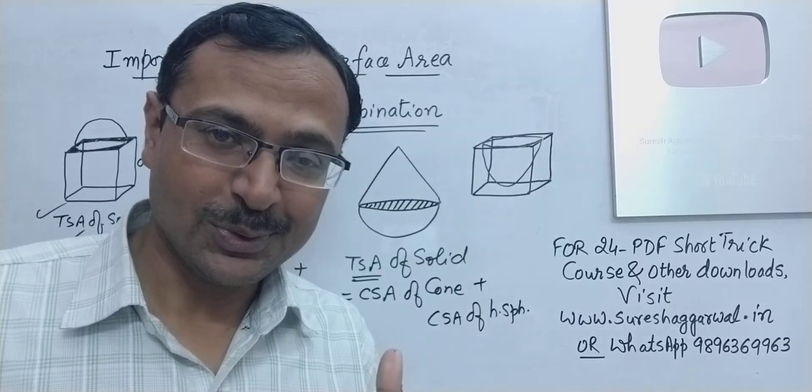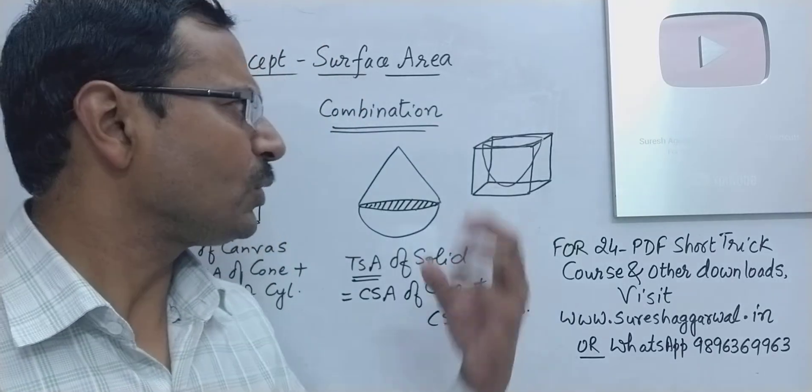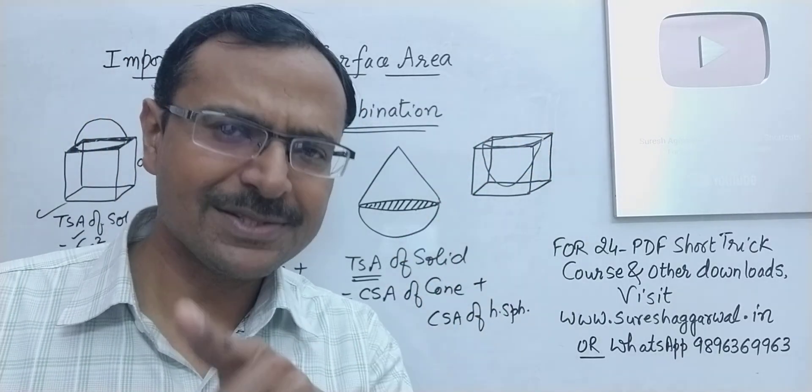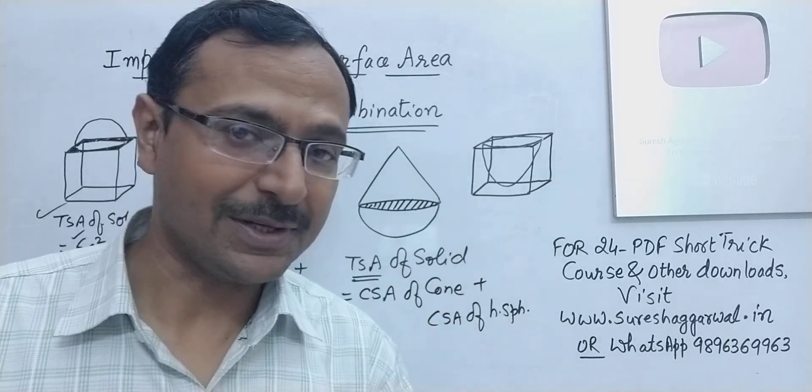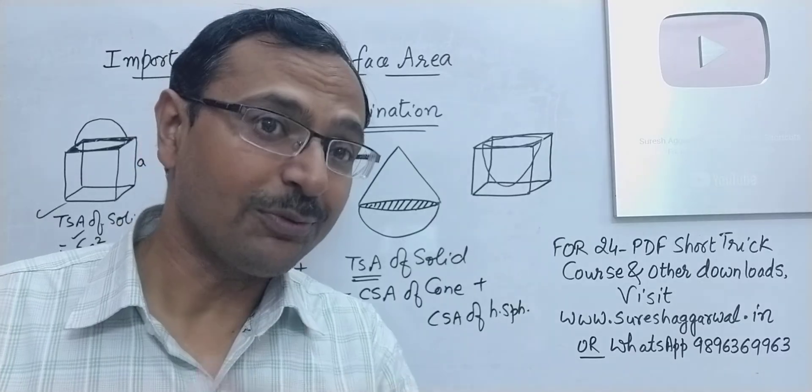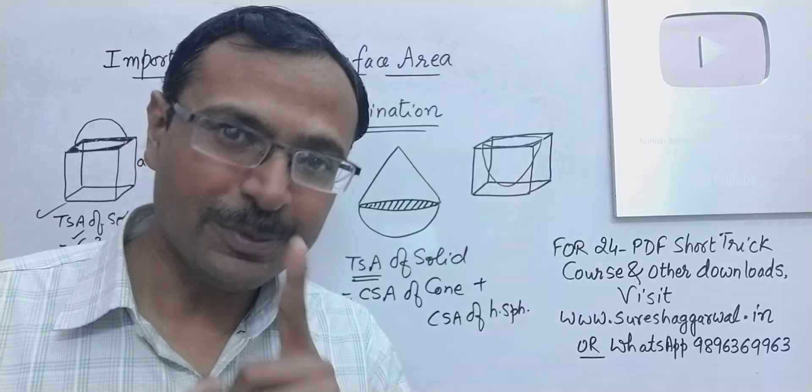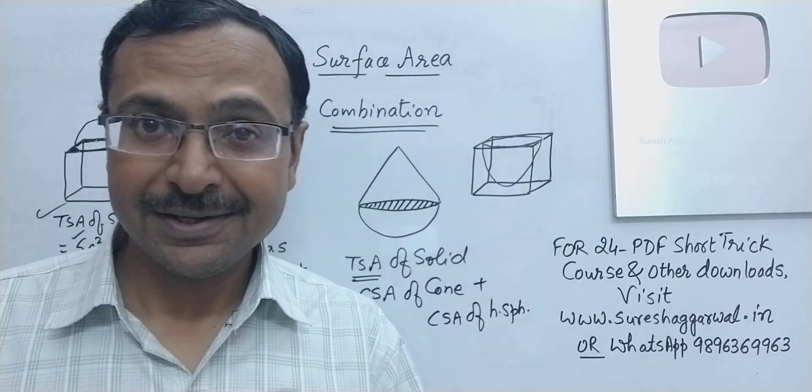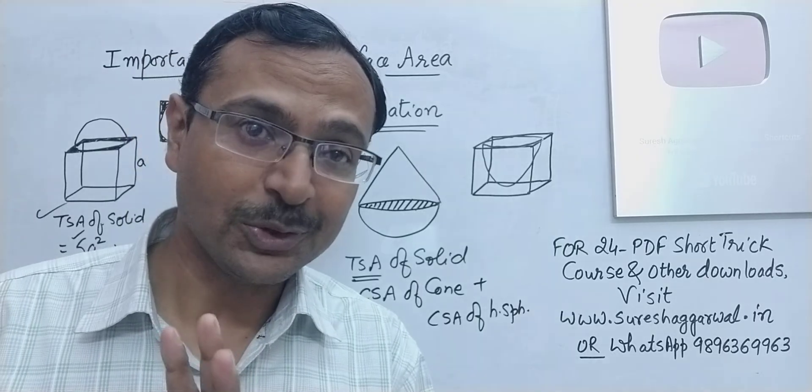Many of the students will be like, okay, total surface area of cube minus the surface area of the hemisphere. No. The subtraction part takes place only in case of volumes because the volume is going to decrease, but the surface area is not going to decrease.